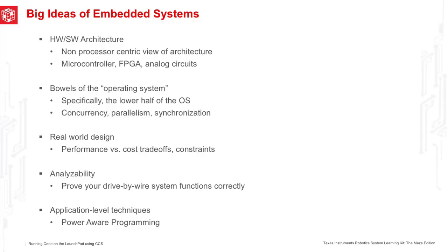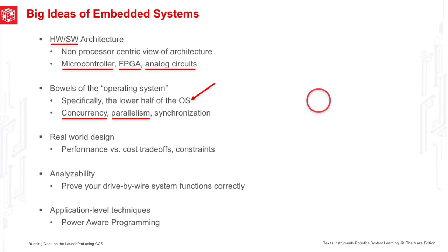Some key ideas in the world of embedded systems: we see a tight coupling between the hardware and the software. It's not just a computer, but a computer doing something. A typical embedded system has software, digital logic, and analog circuits all in synchrony with each other. The operating system — the software managing it — is very important. The software we deploy will have a critical role in managing our resources. We'll see things like concurrency, where we're doing two things at once but switching back and forth; parallelism, where we're doing two things completely together; and synchronization between two systems.